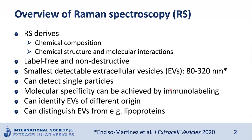Raman can be combined with immunolabeling to achieve molecular specificity — for example, to assess the presence of a specific protein. These are usually achieved by having Raman tags attached to the antibody of choice, or small molecules with a unique Raman label, similar to a fluorophore for fluorescence. Raman can also be used to identify EVs of different origins, from different cell types or disease states, or to identify EVs from other non-EV particles such as lipoproteins, in this label-free manner.